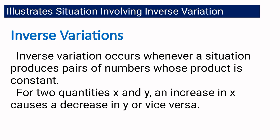By definition, inverse variation occurs whenever a situation produces pairs of numbers whose product is constant. Its difference from direct variation is that in direct variation, the constant is the ratio of the two pairs of numbers, while in inverse variation, the constant is their product. Also, for two quantities X and Y, an increase in X causes a decrease in Y or vice versa — if X increases, Y will decrease; if X decreases, Y will increase.